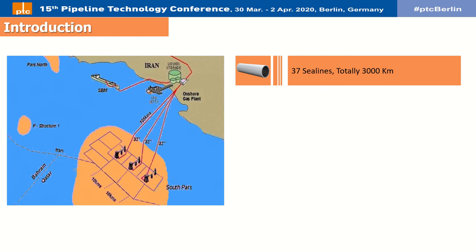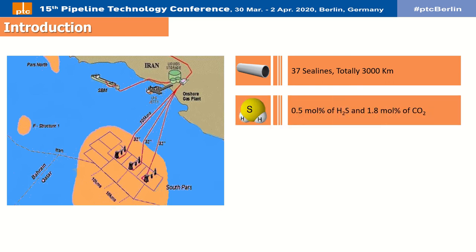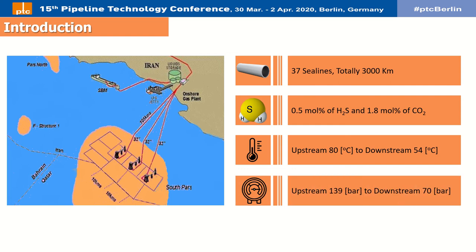South Pars fluid contains 0.5 mol-percent H₂S and 1.8 mol-percent CO₂. When pressure or temperature decreases, condensate water provokes corrosion with acid gas, producing a pH between 3.6 and 3.8.